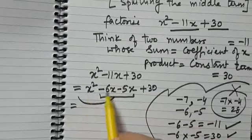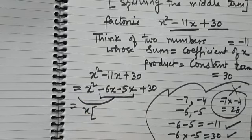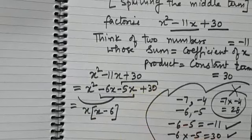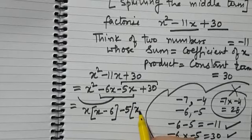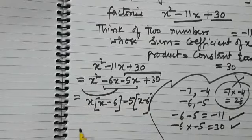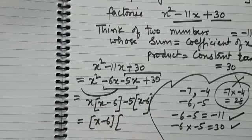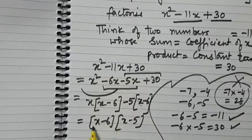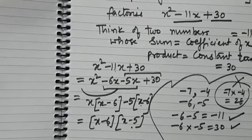Now take common from the first two terms: x is common, leaving x minus 6. From the next two terms, minus 5 is common, also leaving x minus 6. Notice that the binomial x minus 6 appears in both groups, so we take x minus 6 as common, leaving x minus 5. Therefore x² - 11x + 30 = (x - 6)(x - 5). That is how we have factorized it. Let us take one more example.